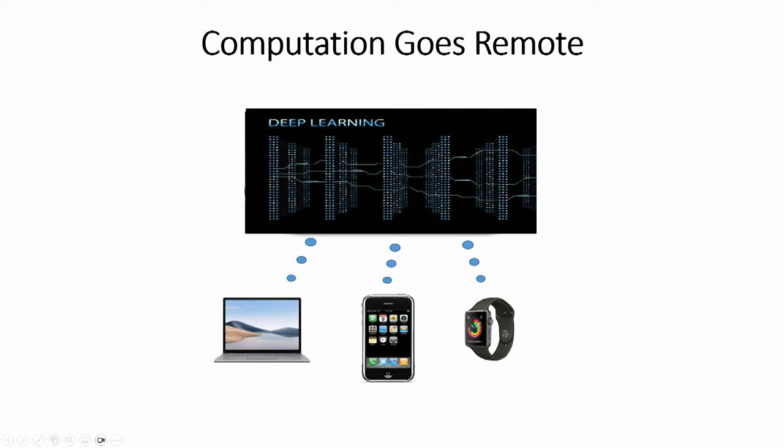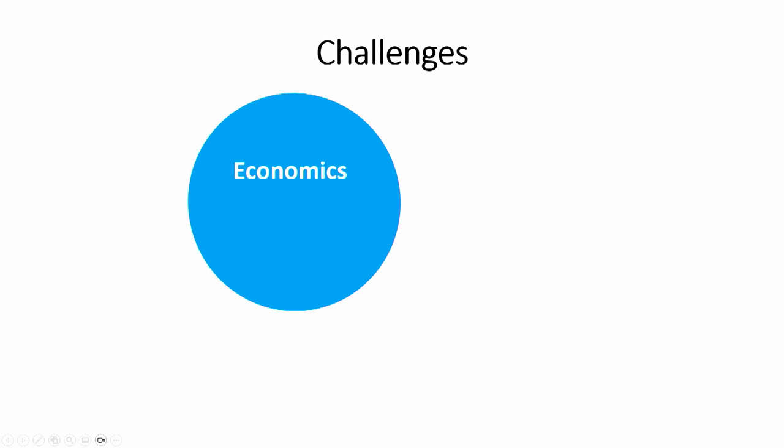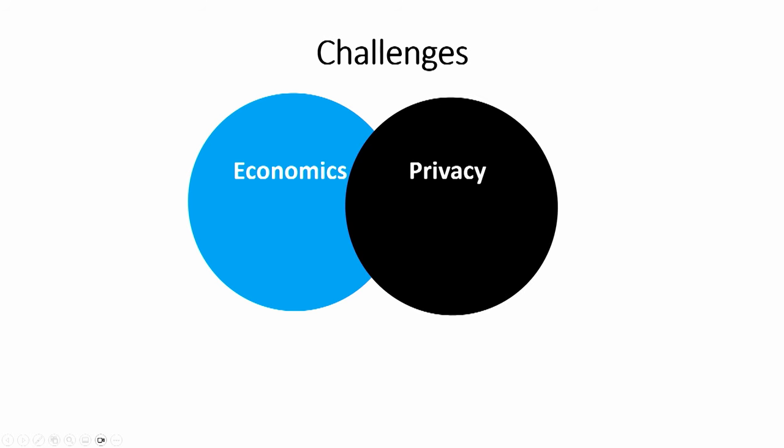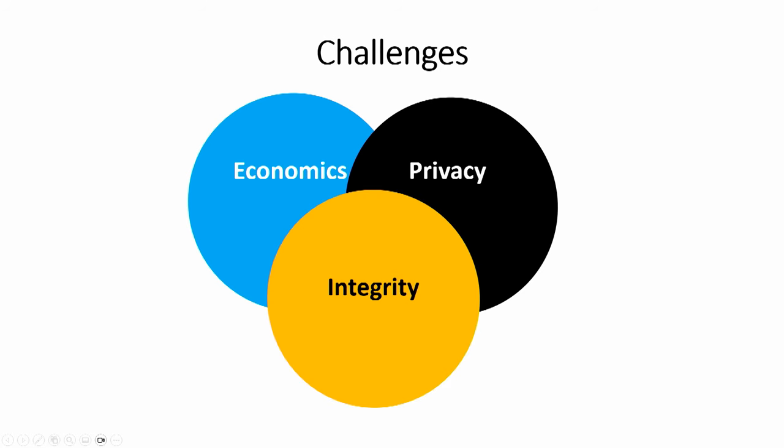This new reality generates many, many challenges, not just that of privacy. There's an economic challenge related to pricing. There's the privacy challenge: how do we ensure that our data remains private even though we send our queries and data elsewhere? And the problem I'm going to talk about today is that of integrity. When we ask a question or outsource some computation, how do we know that the result we get back is the actual result? How do we ensure that integrity holds?